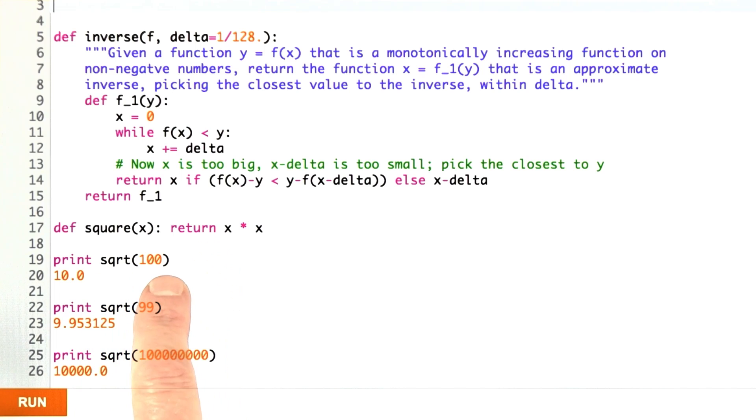We can define square. We can ask for the square root of 100. I guess I've missed a step in here where I have to say that square root is equal to the inverse of square. Now when we ask for the square root of 100, we get exactly 10.0. That's the right answer.